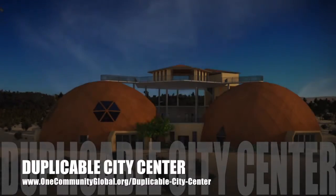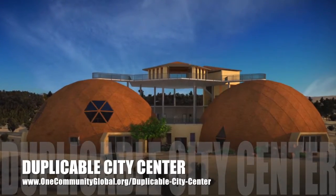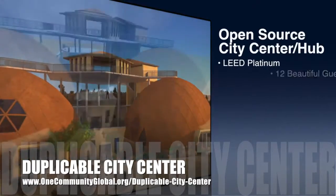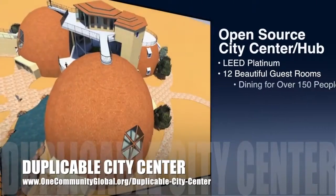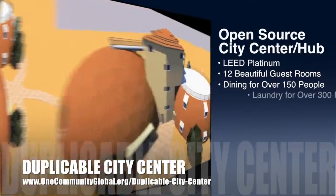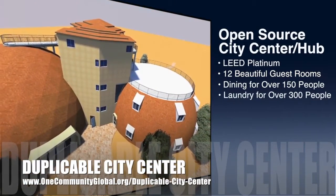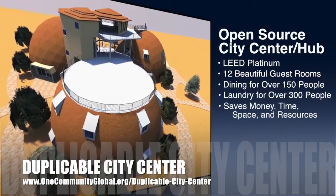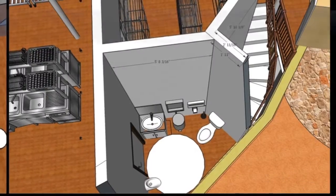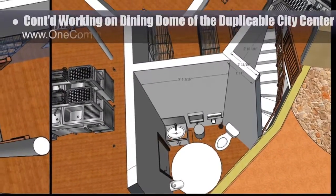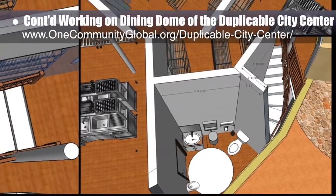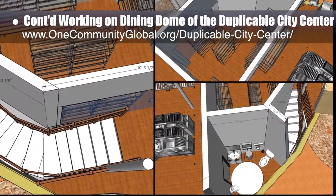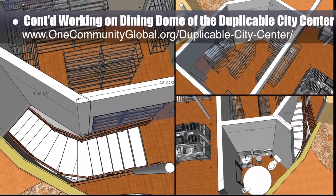One Community is also creating an open source duplicable city center designed to be LEED Platinum certified, provide 12 guest rooms, dining for over 150 people, and laundry and recreation space for over 300 people, all while saving money, time, space and resources. This week, the core team continued working on the dining dome, making additional changes to the walls of the dry storage and restroom located above the basement staircase.